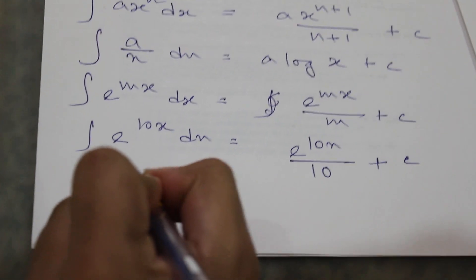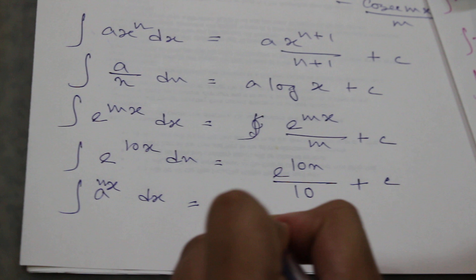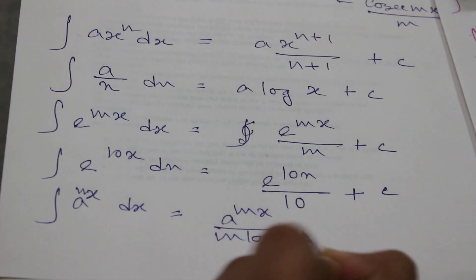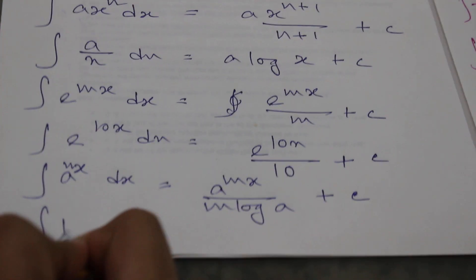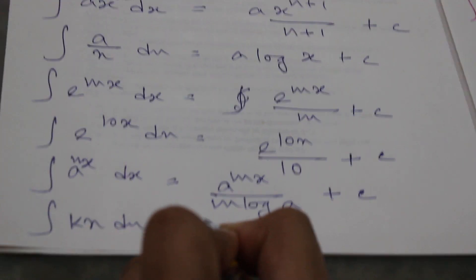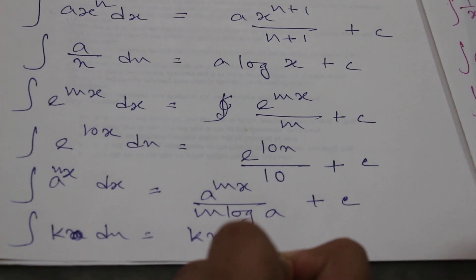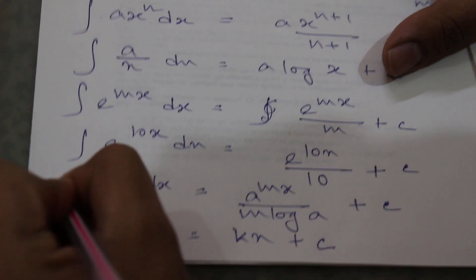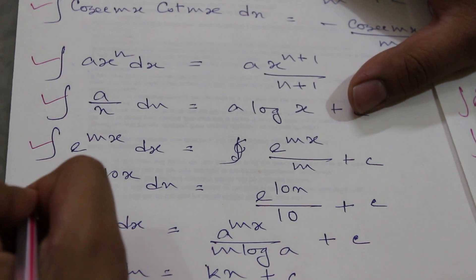For a to the power mx, the integral is a to the power mx divided by m log a — again that coefficient is divided. For integration of kx dx, we get kx plus c. These are again our formulas, and three numerical cases are illustrations.